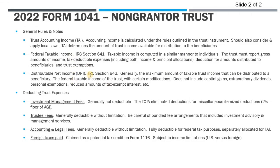Federal taxable income is computed in a similar manner to individuals under the tax code — we report all income and expenses, though some may not be deductible. DNI is very important: think of it as the maximum amount of taxable income that could potentially be distributed to the beneficiaries, and it's also a deduction for the trust to the extent it's being distributed out. DNI doesn't include certain things — capital gains are not included, and there are reduced amounts for taxes on interest and extraordinary dividends.